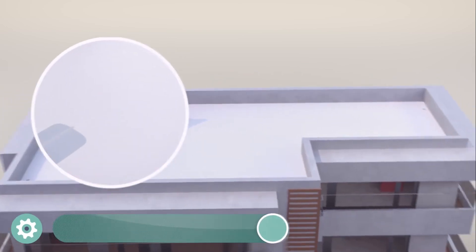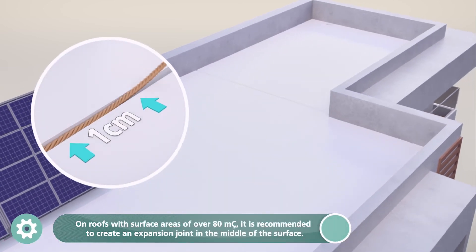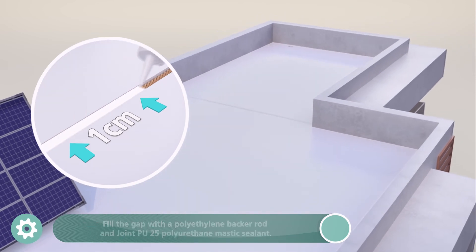On roofs with surface areas of over 80 m2, it is recommended that an expansion joint be located in the middle of the roof.